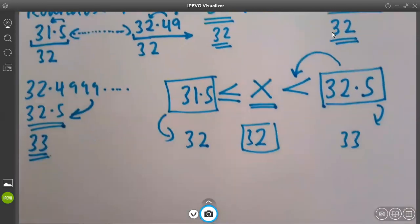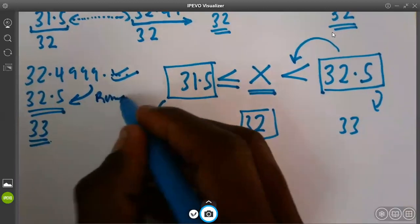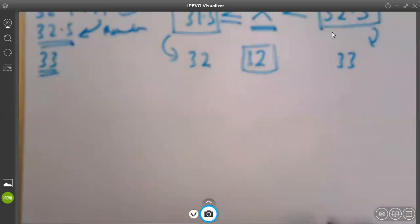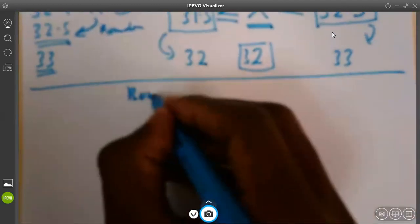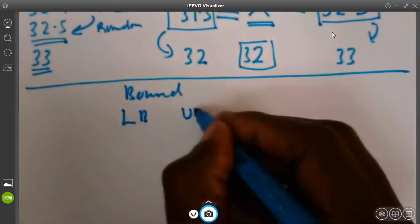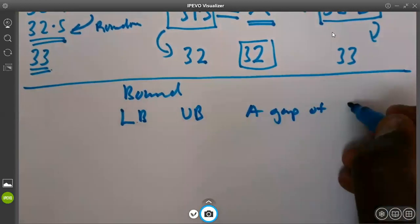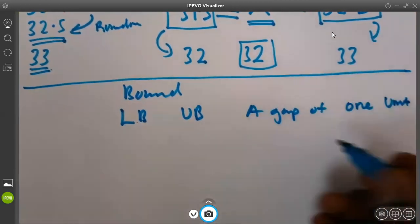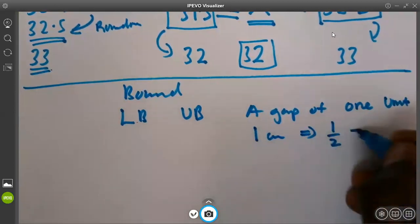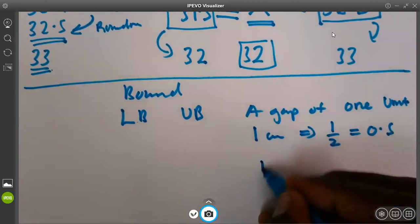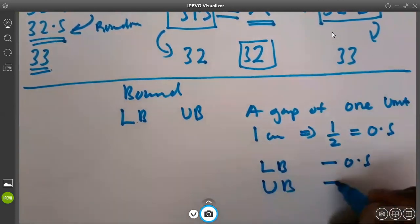To make all this easy, we ignore the numbers and we use the rounded off. This takes us to understanding another concept when you look at bounds. When we are looking at the bounds, that is the lower bound and the upper bound, we shall take a gap of one unit. For instance, if I have one centimeter, I have to split into two to get 0.5. Then for the case of lower bound, I will subtract 0.5. And for the case of upper bound, I will add 0.5.